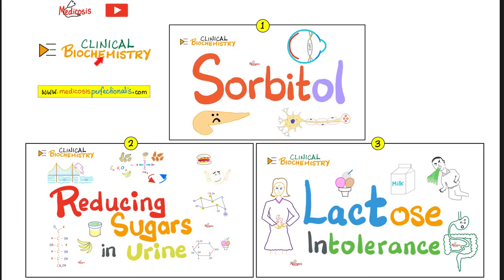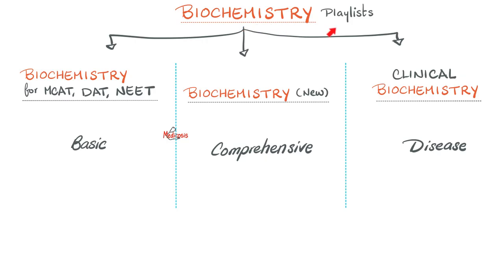In the first video in this playlist, we talked about sorbitol, diabetes, diabetic retinopathy, diabetic neuropathy, and cataracts. Then we talked about why we have reducing sugars in the urine. Today we're talking about lactose intolerance. In the next video, we'll talk about galactosemia, which is a contraindication to breastfeeding — a baby with galactosemia should not be breastfed. I have three biochemistry playlists on this channel: the first is about the basics, the one called 'new' is very comprehensive, and this one is very clinical.